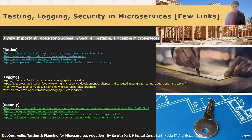We spoke about data management. In data management we covered database per service, shared database, saga choreography, and saga orchestration. Beyond these, there are also other data management patterns called CQRS — Command Query Responsibility Segregation — and event sourcing.